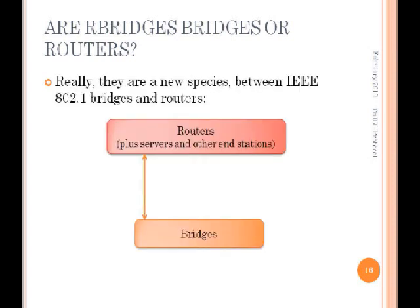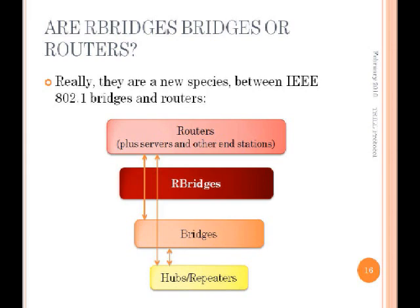The answer is that R-Bridges are really neither exactly — they combine the best features of both and provide a new layer. Currently you think of routers, and you can put bridges between routers. R-Bridges are a new point in the middle: transparent to routers the same way bridges are, so an R-Bridge campus looks to a router like a big multi-access link. But they terminate spanning trees, so as far as bridges are concerned, an R-Bridge is an end station — cutting up your spanning tree into smaller pieces.